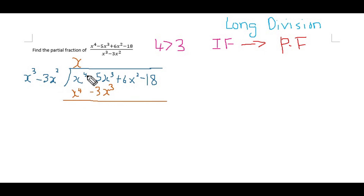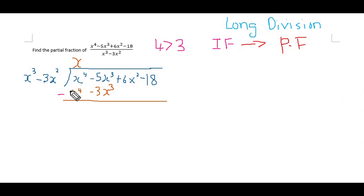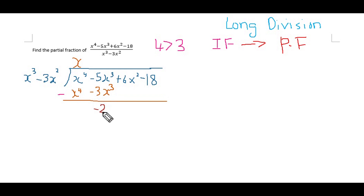Then, x⁴ minus x⁴ gives 0. Next, negative 5x³ minus negative 3x³ gives negative 5x³ plus 3x³, which equals negative 2x³.